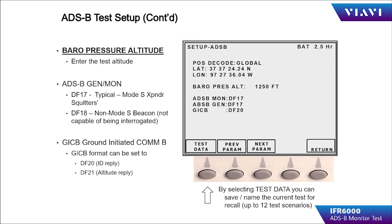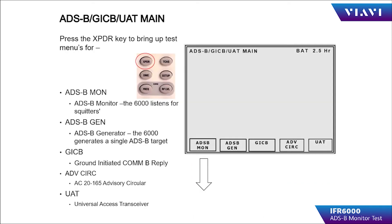The GICB setting should be set for DF-20. From the opening menu, pressing the transponder key brings up the ADS-B GICB test menu.